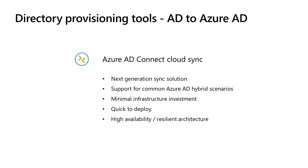And this brings us to Azure AD Connect Cloud Sync. Cloud Sync is our new cloud-based directory sync solution that leverages a lightweight agent design requiring only a minimal on-prem footprint, while allowing you to manage all your provisioning configuration in the cloud. It has support for most of the common Azure AD hybrid scenarios, while also extending its support for new scenarios such as disconnected forests, which we frequently see in mergers and acquisitions. Due to its smaller on-prem footprint and multi-agent support, it is significantly easier to set up and provides resiliency that is not available in the other solutions.